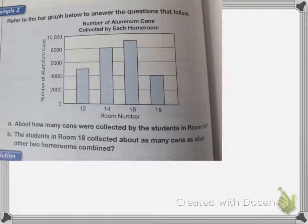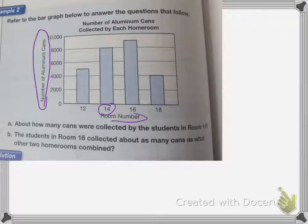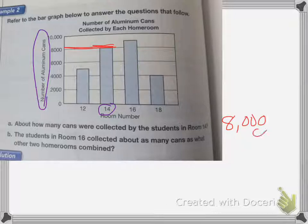A is about how many cans were collected by the students in room 14. So here's room 14. The column on the left shows me what it's measuring, so the number of aluminum cans. And then the bottom is my room number. So in room 14, we got up to 8,000 cans. So they gathered 8,000 cans from room 14.